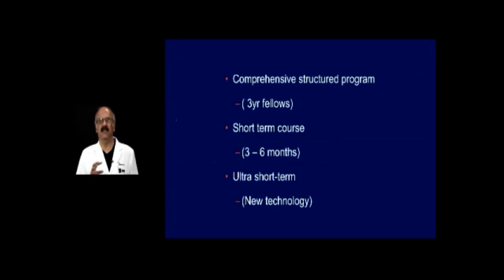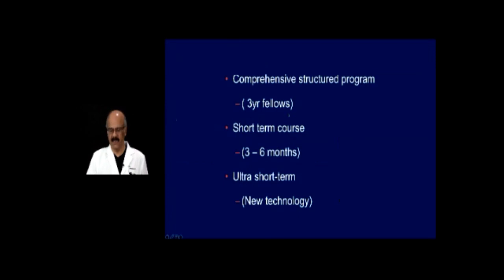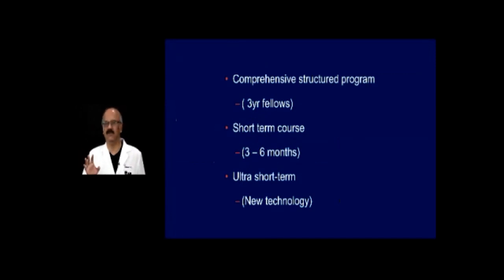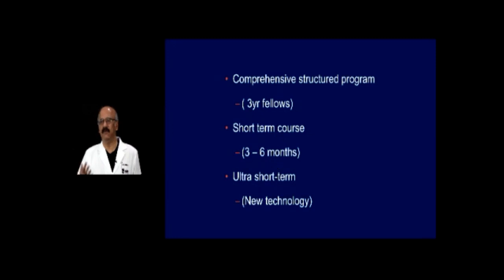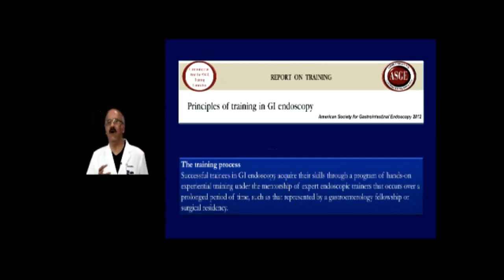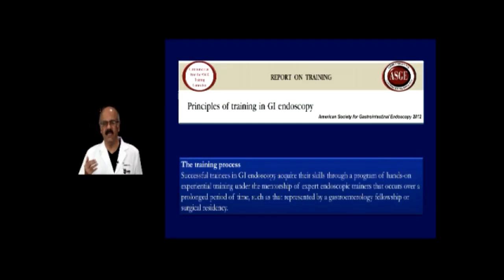There are three types of endoscopic training currently. First is the comprehensive structured program that occurs over a three-year fellowship. Second are short-term programs, usually to learn a particular skill after you have learned your endoscopy — for example, to learn advanced polypectomy or endoscopic ultrasound. Ultra-short-term programs of a week can be done for new technologies like endoscopic suturing, practicing on animal models. In general, all training curricula are very clear that endoscopic training should be done as part of a three-year program.